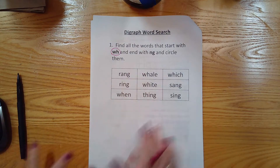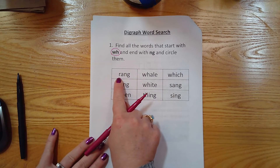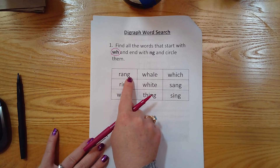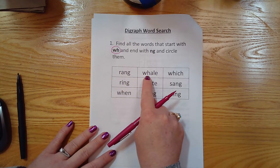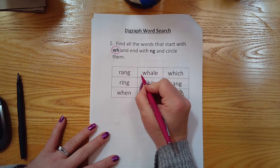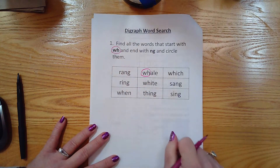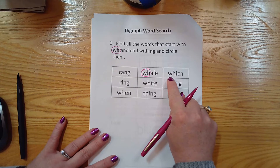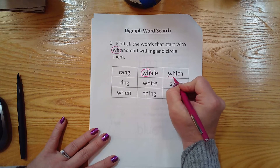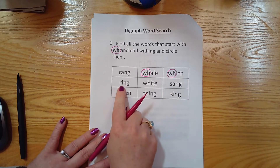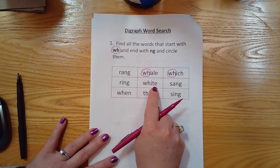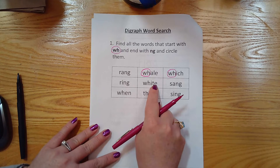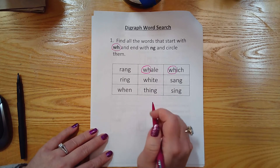Now let's look at our words down here below. This first word: ring. Does that have a W-H digraph? Nope. Let's look at the next one — whale. Yes, it does. I'm gonna circle the W-H in whale the same color I circled it up here. Let's look at our next one: which. I see the W-H there, that's a digraph. Good. Let's keep going. Ring — no. White — does that have the W-H, friends? Good, did you circle it?